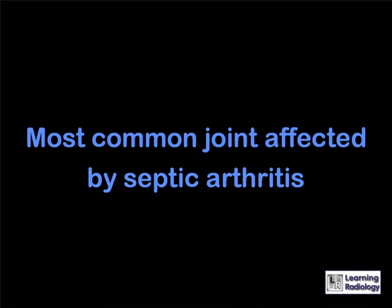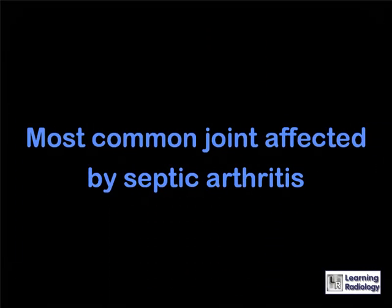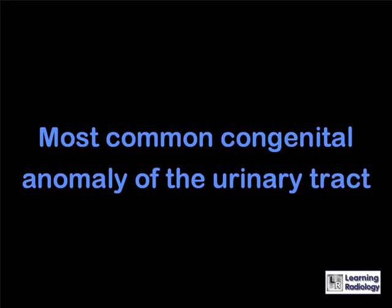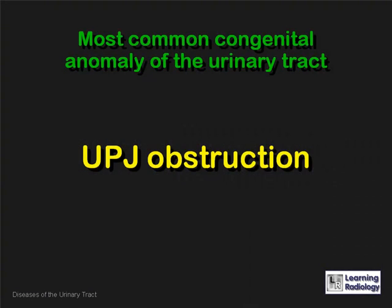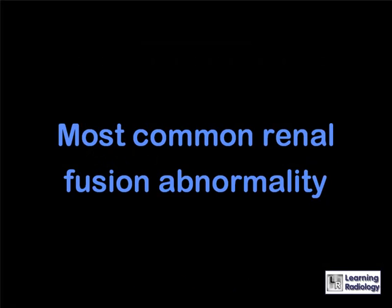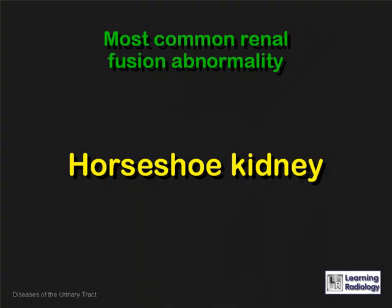What is the most common joint affected by septic arthritis? The hip joint. Genitourinary. What is the most common congenital anomaly of the urinary tract? Ureteropelvic junction obstruction. What is the most common renal fusion abnormality? A horseshoe kidney.